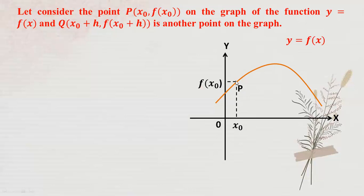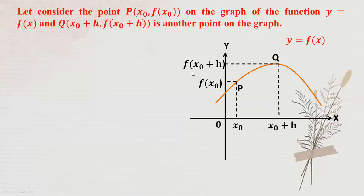You can use point P there. Q is another point. Q is at x₀ plus h - that is the rule. We have set the x-coordinate accordingly. So when we use f, it will give us f of x₀ plus h.